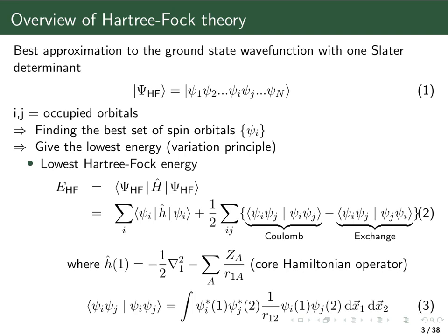Correspondingly, we have the electron-electron interaction operator, which is a two-electron operator. If we have the same Slater determinants on both sides, the Slater-Condon rules tell us that we get a double sum over two-orbital indices i and j, and then this difference of two types of two-electron integrals.